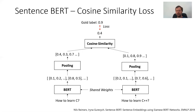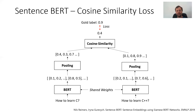The most simple setup to train sentence embeddings with BERT is using the cosine similarity loss — that's also the original loss presented in the Sentence-BERT paper. You have two input texts, for example 'how to learn C' and 'how to learn C++'. You pass them through a BERT network, which gives you contextualized BERT embeddings for all the words. Then you apply a pooling operation to get a fixed-sized vector. Different pooling operations are possible, such as using the CLS token or, preferably, mean pooling of all contextualized BERT embeddings. Then you compare these two embeddings using cosine similarity.